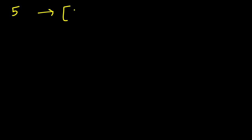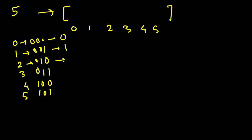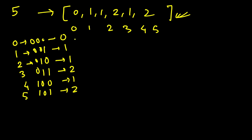For input five, you return all the bit counts from zero to five inclusive. Zero is represented as 000, one's last bit is 1, two is 10, three is 11, four is 100, five is 101. So zero has no bits set, one has one bit set, two has one, three has two, four has one, five has two. The result should be [0, 1, 1, 2, 1, 2].